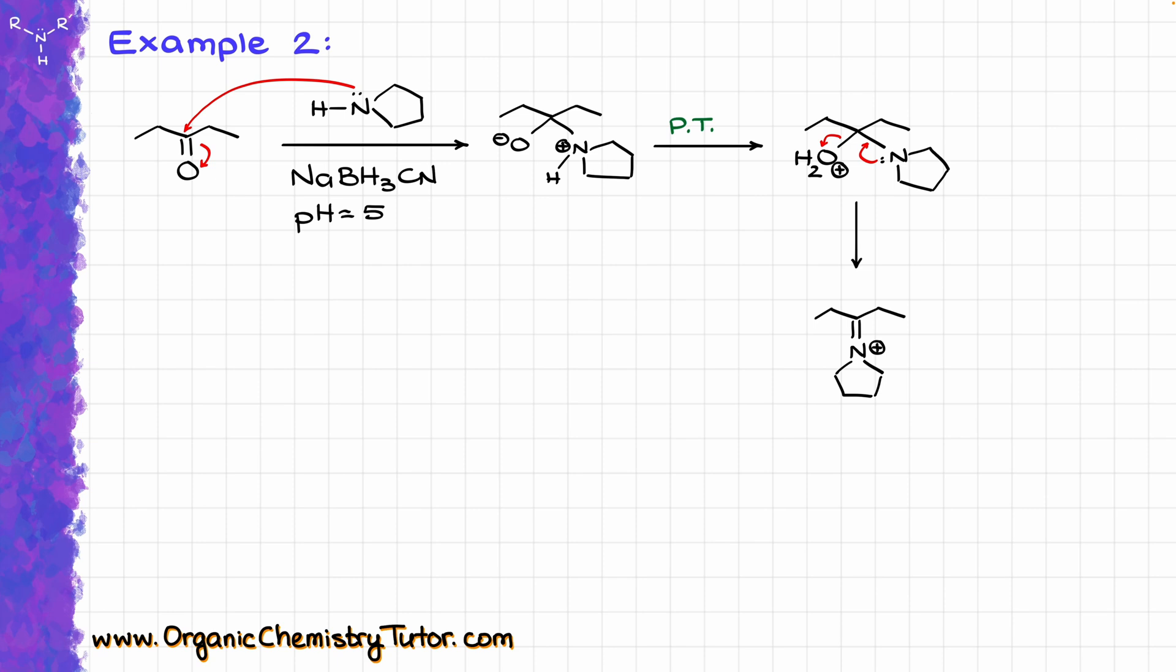And yes, in this case, nitrogen doesn't have a hydrogen, but we don't really care about that part. We are not trying to make a stable imine here, after all, because now, once we have this compound, our cyanoborohydride is going to come in and immediately attack the carbon of this iminium ion, reducing this molecule, giving us our final product, which in this particular case is going to be a tertiary amine. So far, so good?